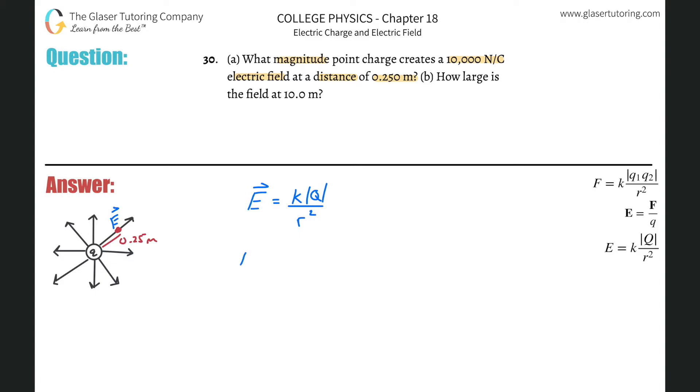So basically, all I now need to do is just plug in for this problem. So it's going to be K equals 8.99 times 10 to the ninth, multiplied then by Q, which is what we're trying to find. So what's the E? This is 10,000. And that's all divided by the distance between them squared. Don't forget to square this.